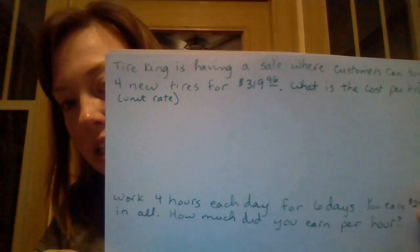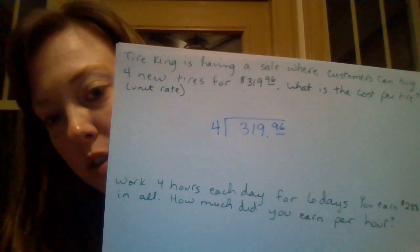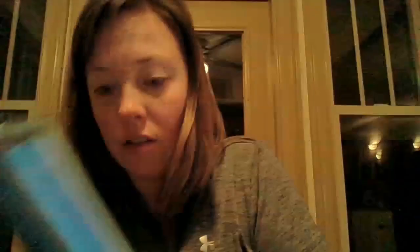So all you do is take the price, $319.96, and divide it by four — it looks like this. You just put the price in the house, like we talked about last week, and then put the four on the outside. You can use your calculators for this unit. You put $319.96 in there, divide it by four, and you get $79.99 per tire.